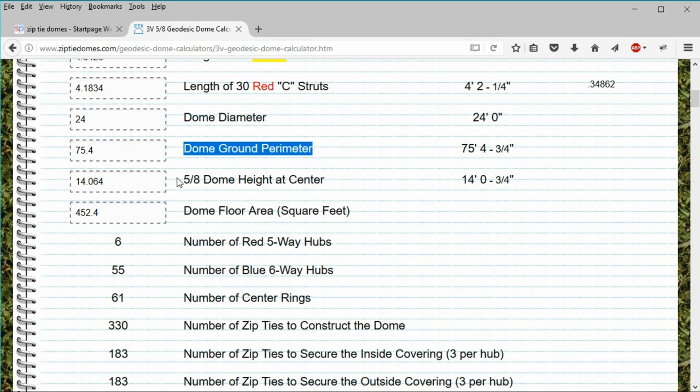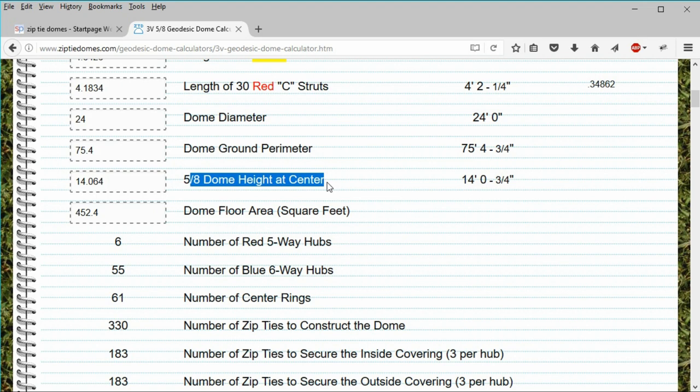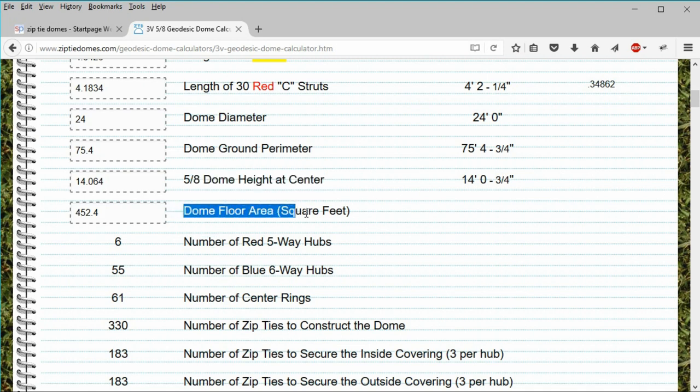The dome height is a little over 14 feet in the center. Since it is a 3V 5/8 dome, it will be slightly taller in the center than the radius of the dome. And the dome floor area is 452 square feet.